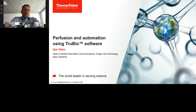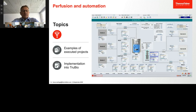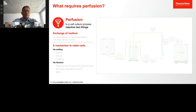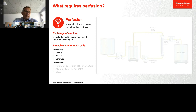I want to discuss what perfusion requires. Perfusion in a cell culture process requires two things: the exchange of medium and a mechanism to retain cells. The exchange of medium is usually defined by operating vessel volumes per day — VVDs. Looking at the mechanisms, there are two base philosophies. One is via settling — either passive settling by switching off agitation, an acoustic method, or a centrifuge.